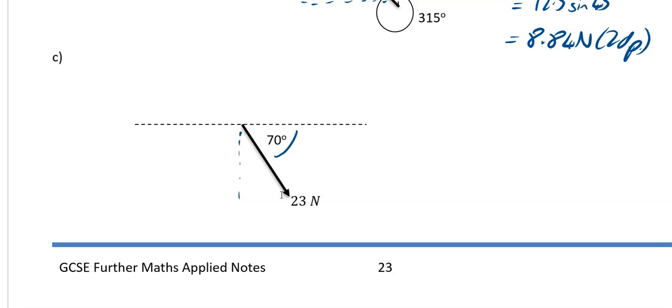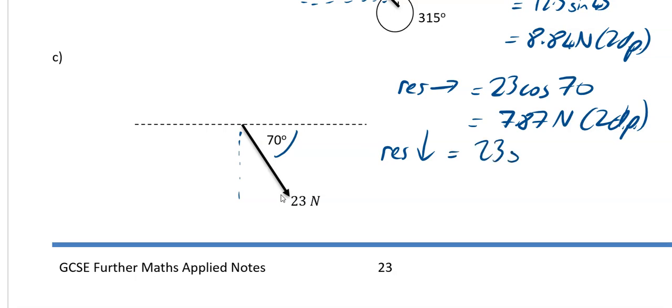Next example, resolve horizontally again. It's going to be 23 cos 70. And if I do that on my calculator, I'm going to get 7.87 newtons to two decimal places. And I'm going to resolve vertically downwards. And what I'm going to get is 23 sin 70, which is 21.61 newtons to two decimal places.